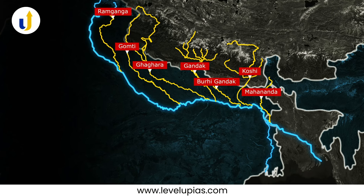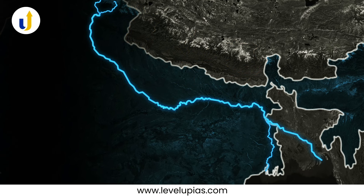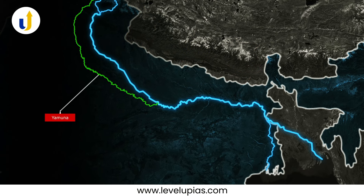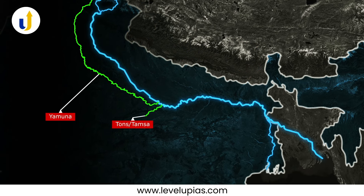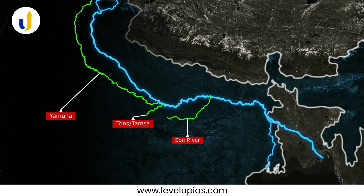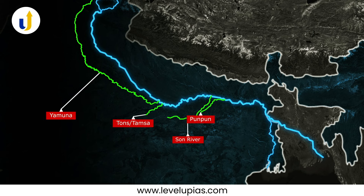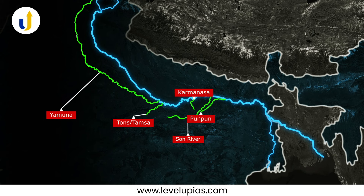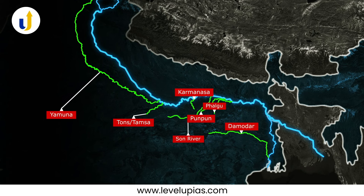The right bank tributaries of Ganga are Yamuna, Tamsa, Son, Punpun, Karamnasa, Falgu and Damodar.